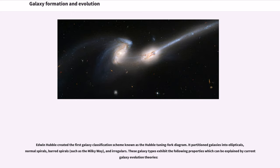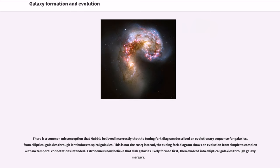These galaxy types exhibit properties which can be explained by current galaxy evolution theories. There is a common misconception that Hubble believed incorrectly that the Tuning Fork Diagram described an evolutionary sequence for galaxies, from elliptical galaxies through lenticulars to spiral galaxies. This is not the case. Instead, the Tuning Fork Diagram shows an evolution from simple to complex with no temporal connotations intended.